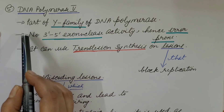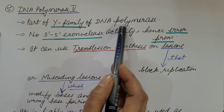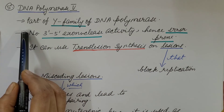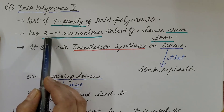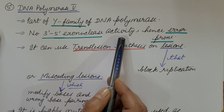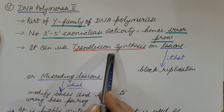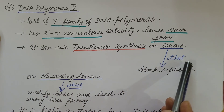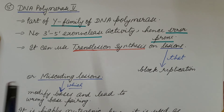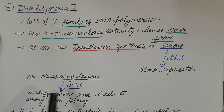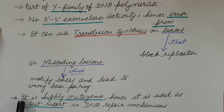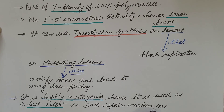DNA polymerase 5 is also part of the Y family of DNA polymerases. Like DNA polymerase 4, it has no 3'→5' exonuclease activity; hence it is also error-prone. It can use trans-lesion synthesis on lesions that block replication, or miscoding lesions which modify bases and lead to wrong base pairing. It is highly mutagenic; hence it is used as a last resort in DNA repair mechanisms.